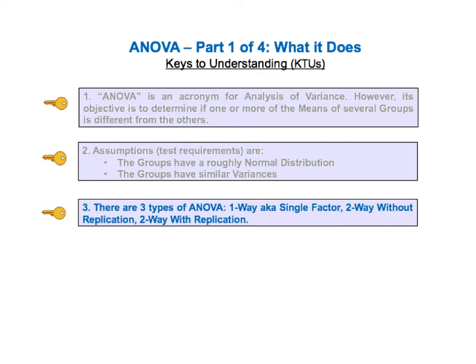Key to understanding number three states there are three types of ANOVA: one-way, also known as single factor; two-way or two-factor without replication; and two-way or two-factor with replication.